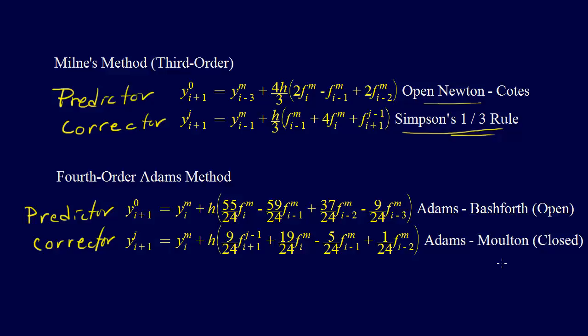So the best way to probably introduce the Adams-Bashforth and Adams-Moulton formulas are just, we probably could have introduced them in the integration, in the section on integration, because they're nothing more than integration formulas. However, they operate a little bit differently than Newton-Coates formulas. However, they're analogous.